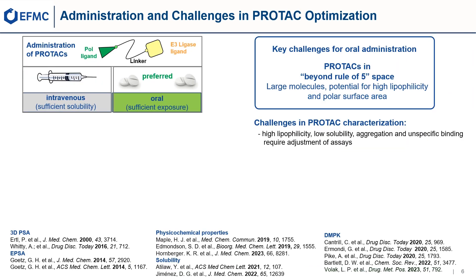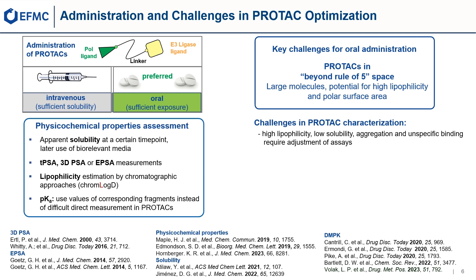The optimization for in vivo administration of PROTACs in animals or in a clinical setting faces some challenges. PROTACs are in the beyond Rule of 5 space — large molecules with molecular weight above 600 and with a potential for high lipophilicity and polar surface area. These characteristics and their tendency to aggregation or unspecific binding require adjustment of assays generally used in drug discovery. For comparison of advanced PROTACs, apparent solubility is measured at a certain time point using biorelevant media. For polar surface area, experimental measurements such as exposed polar surface area are preferred over calculated values.